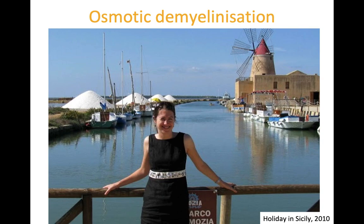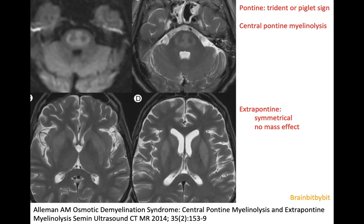A cautionary story is told to teach that you should not correct hyponatremia too quickly, because this might lead to damage in the pons called pontine myelinolysis, which on imaging gives hyperintensity on T2-weighted and diffusion-weighted images with a so-called trident sign and sparing of the periphery of the pons.